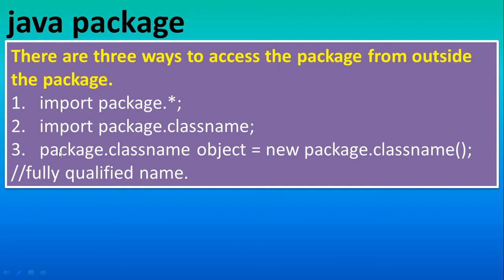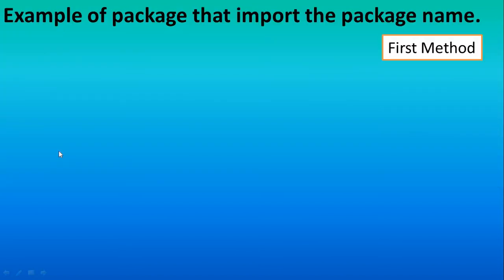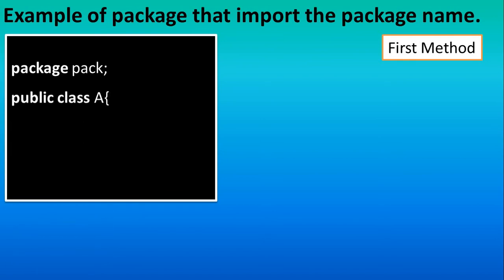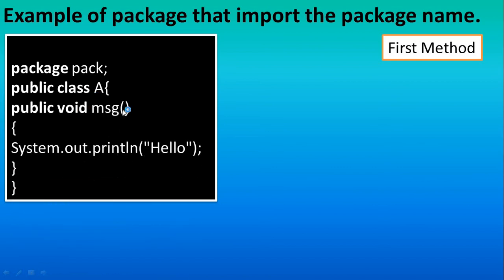The first method: suppose you are creating a package whose name is 'pack' and then the class is 'A' inside it. You can put any code — suppose we are adding a method which shows a hello message. You can save this file with the class name as a.java.